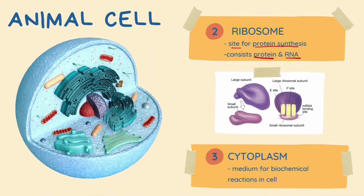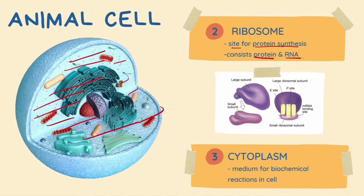Other than that, we have the cytoplasm. The cytoplasm consists of a jelly-like medium that contains all the components suspended within the cell. Inside the cytoplasm there are organic compounds such as lipids, proteins and carbohydrates. The function of cytoplasm is as a medium for all the biochemical reactions inside the cell.